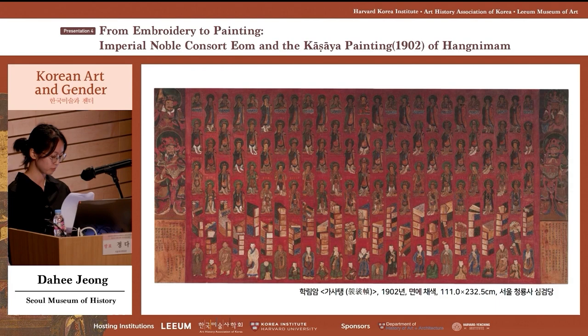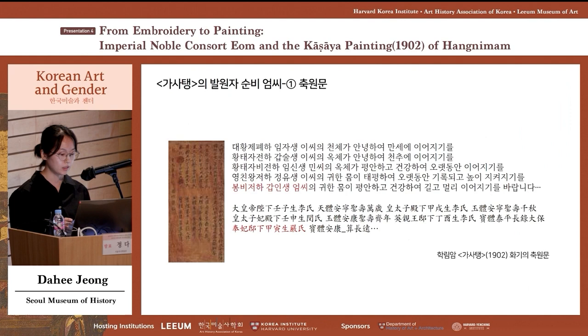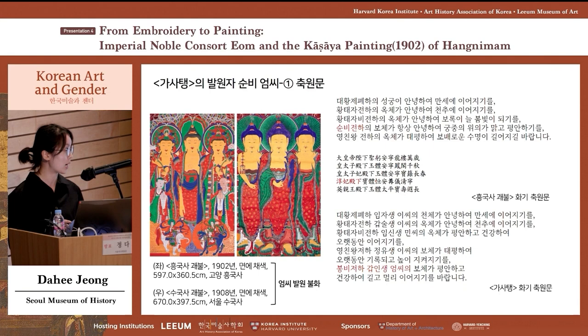The only record on Ga Sa Taeng is the inscription on the Buddhist painting, but it does not identify the patron. It features a prayer for the well-being of Gojong — recorded as the emperor — the crown prince, the crown princess, Gojong's consort Sunbi Eum, and Eum's son Yeongchin. However, in her 2014 paper, Yoo Kyung-hee first attributes the origin of Ga Sa Taeng to Lady Eum.